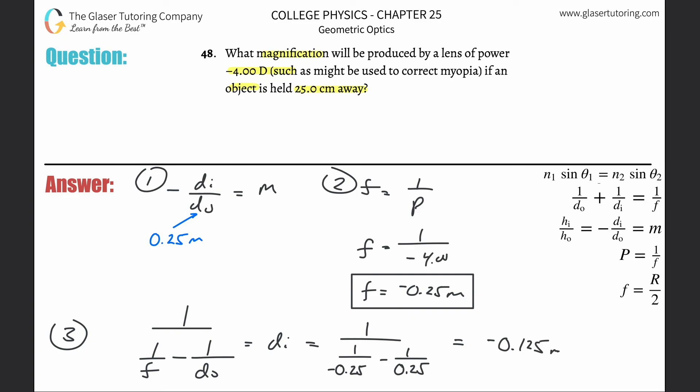That's 12.5 centimeters, and it's negative. So we got that image distance. Now I can finally take this image distance over here and plug it into my magnification formula.